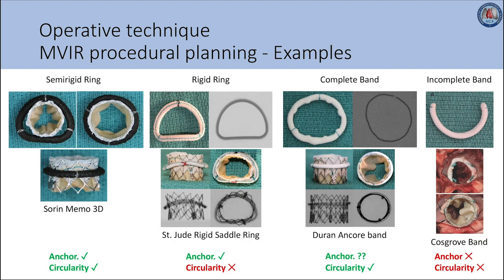Here are some examples of the four general ring types. From left to right: semi-rigid ring, rigid ring, complete band, and incomplete band. Semi-rigid rings such as the Sword Memo 3D can provide a good anchor as well as circularity. Rigid rings such as the St. Jude rigid saddle can provide a good anchor but poor circularity. Complete bands such as the Duran-Anchor band can attain circularity and anchoring but only if used in small sizes. Incomplete bands such as the Cosgrove band do not provide either anchoring or circularity.